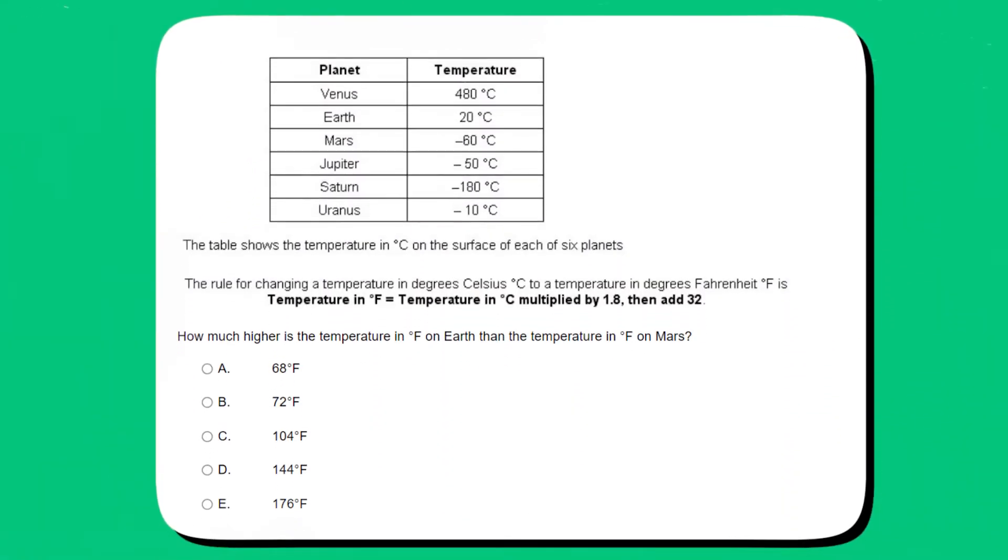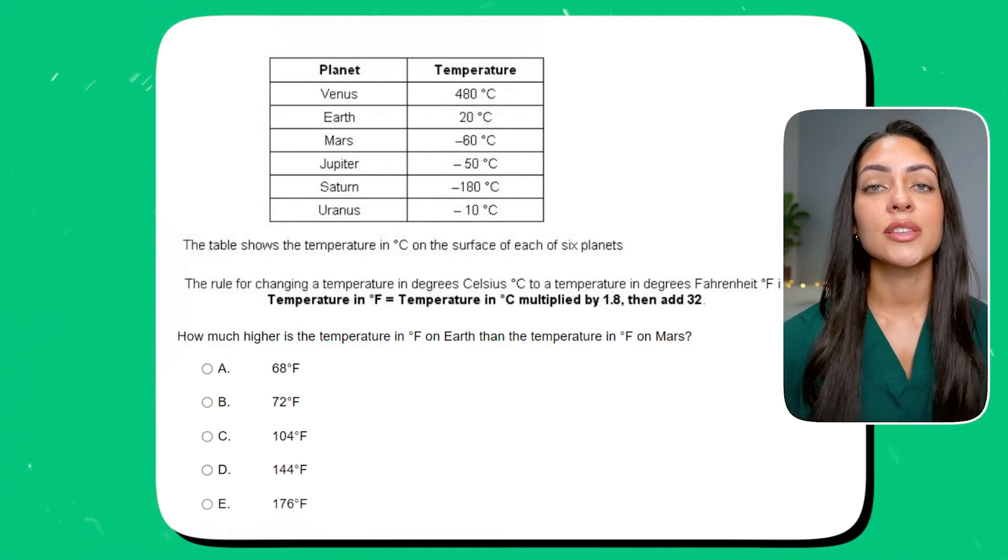The table shows the temperature in degrees on the surface of each of six planets. The rule for changing a temperature in degrees Celsius to a temperature in degrees Fahrenheit is: temperature in Fahrenheit equals temperature in degrees Celsius multiplied by 1.8, then add 32. How much higher is the temperature in Fahrenheit on Earth than the temperature in Fahrenheit on Mars? Is it A: 68°F, B: 72°F, C: 104°F, D: 144°F, or E: 176°F? Take some time to try to figure this out yourself.